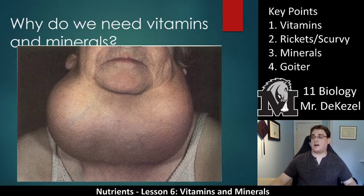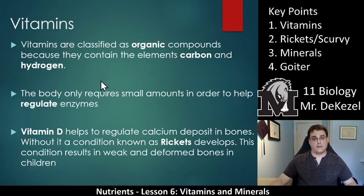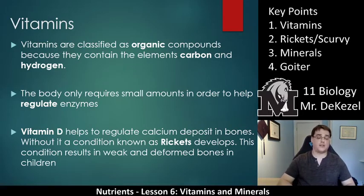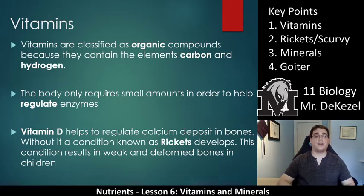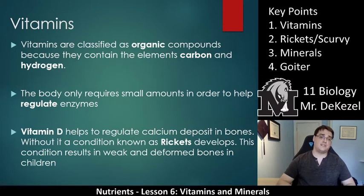Believe it or not, a simple mineral will be able to prevent it. But let's talk about vitamins first. Vitamins are classified as an organic compound because they contain the elements carbon and hydrogen, almost essentially exclusively. The body only requires small amounts in order to help regulate different processes. We often have way too much vitamin C — if you drink a cup of orange juice you've got 120 percent of your vitamin C for the day.